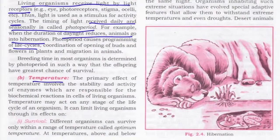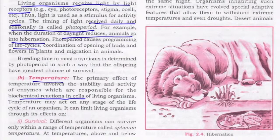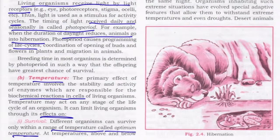Temperature — the primary effect of temperature involves the stability and activity of enzymes responsible for biochemical reactions in cells of living organisms. Temperature acts at any stage of the life cycle of an organism. Different organisms can survive only within a certain range of temperature, called the optimum temperature. Above and below its optimum range, the living organism gets perished — that means it dies and cannot survive.